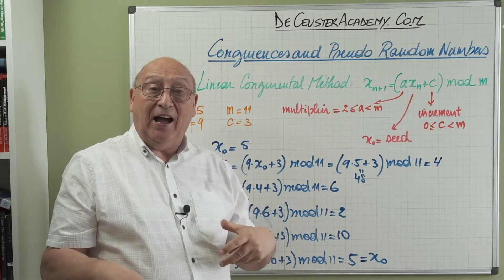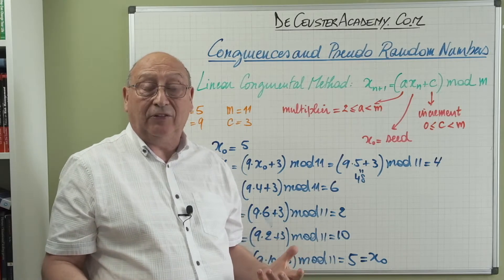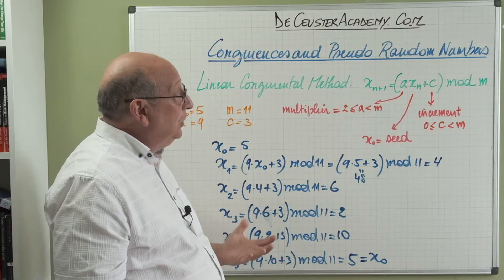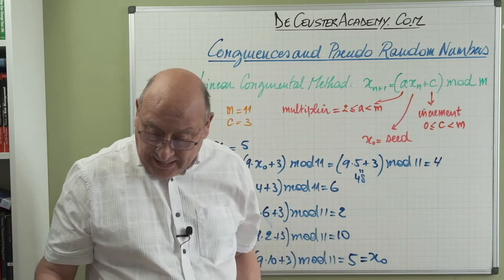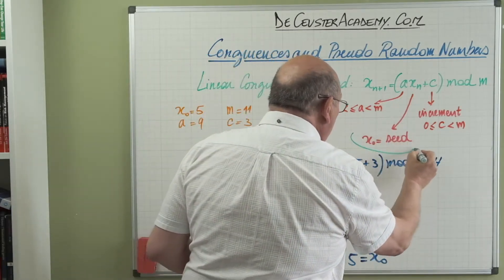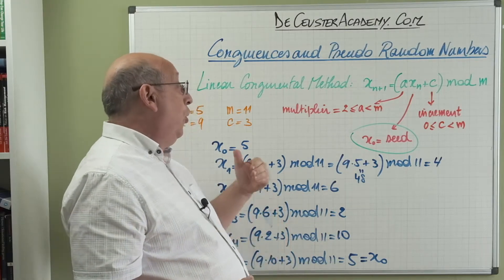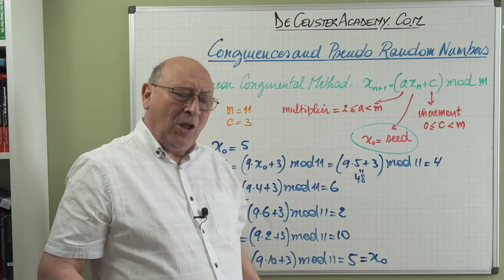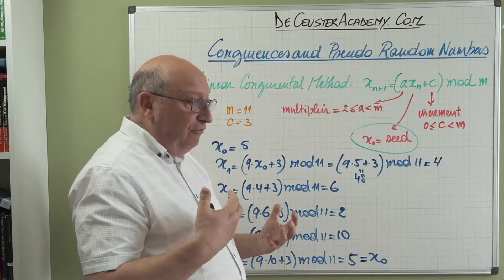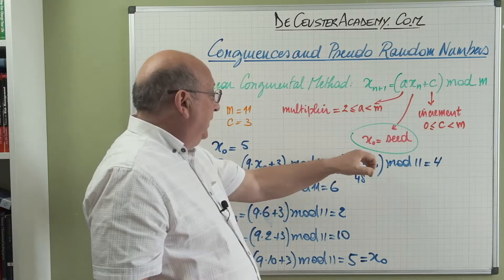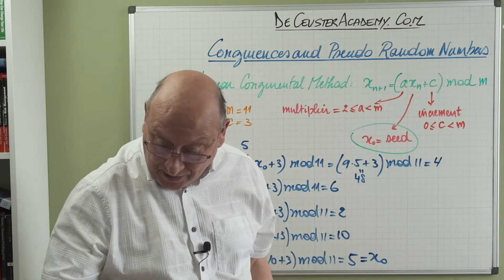We'll look at an example with higher numbers to create more pseudo-random numbers before repetition occurs — since from the modulus function we know repetition will eventually happen. It's also important to discuss the seed: where does x_0 come from? If we always use the same x_0, we'll always generate the same series of pseudo-random numbers, which is not ideal.